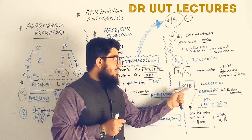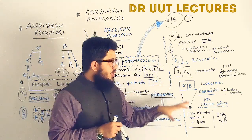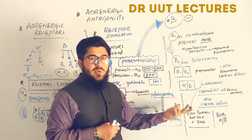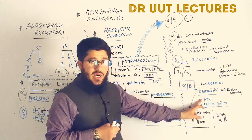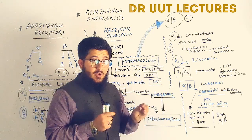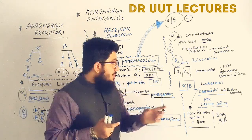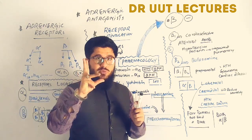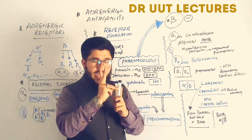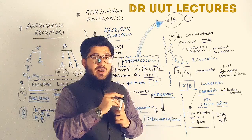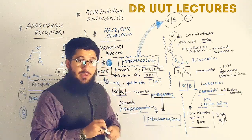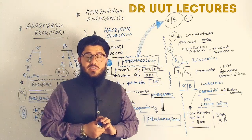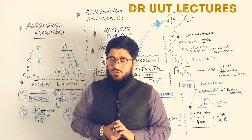A special class of drugs blocks both alpha and beta receptors, used for hypertension and cardiac diseases. Carvedilol notably reduces cardiac mortality. Both labetalol and carvedilol treat hypertension and cardiac failure. Interestingly, labetalol and carvedilol have four isomers: two isomers bind to receptors as agonists or partial agonists, while the remaining two block the receptors, giving them their combined adrenergic antagonistic action. Thank you for watching.